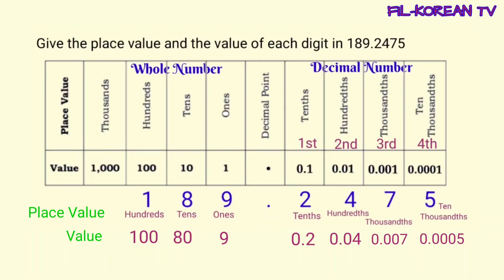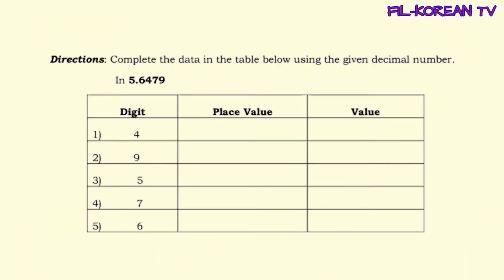Ito na yung place value at value ng bawat digit sa given number na one hundred eighty nine and two thousand four hundred seventy five ten thousandths. Tandaan, ang place value ay ang pangalan ng posisyon, at ang value ay yung katumbas na halaga ng digit sa given number. Ngayon, sagutin natin ang activity na ito: complete the data in the table below using the given decimal number five and six thousand four hundred seventy nine ten thousandths.